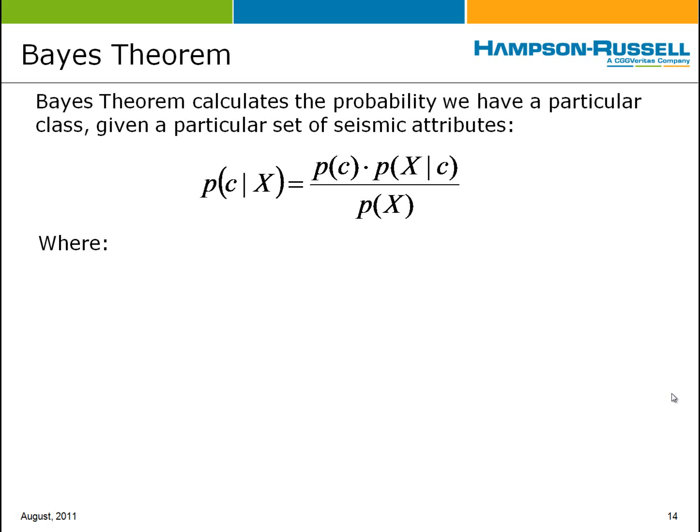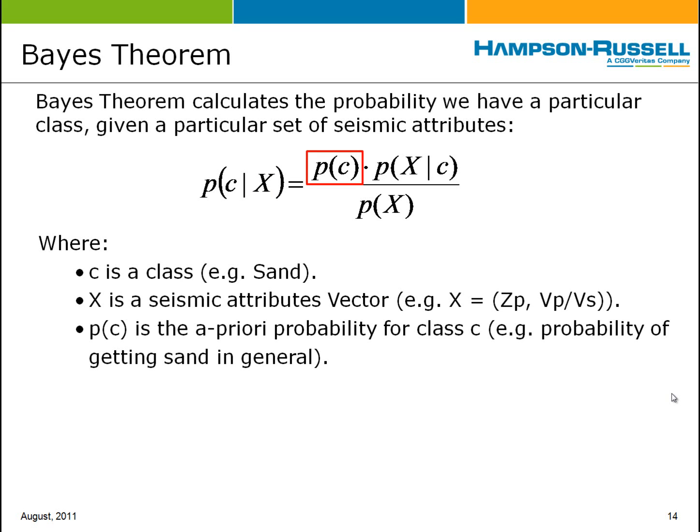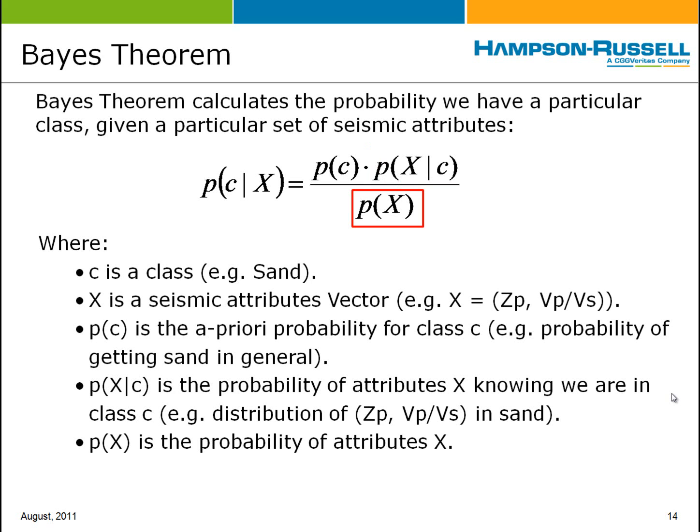Bayes' theorem calculates the probability we have a particular class given a particular set of seismic attributes. On the left, P of C given x refers to the probability that C is a particular class — for example, sand — given the value x, which represents the seismic attributes, such as values of Zp and/or VP/VS ratio. On the right, we have three factors. The first is the a priori probability for sand, which represents the likelihood of getting a gas sand independent of other information, typically calculated from how many samples in the original logs correspond to that class. The next factor — very important — is the probability density function: the probability of getting the seismic attributes if we happen to have that class. And in the denominator, we have a normalization constant.